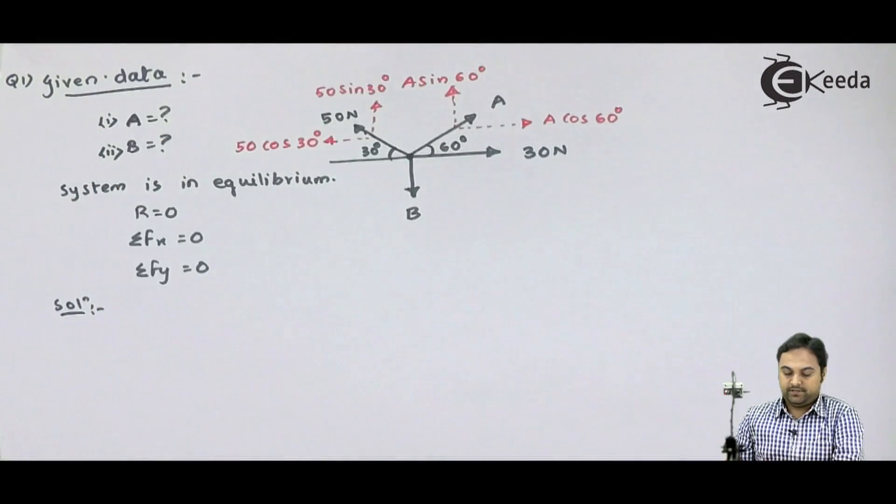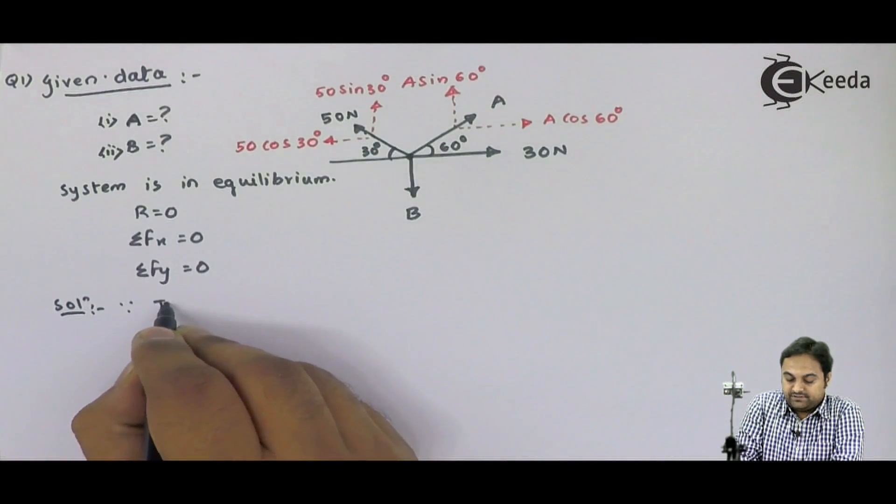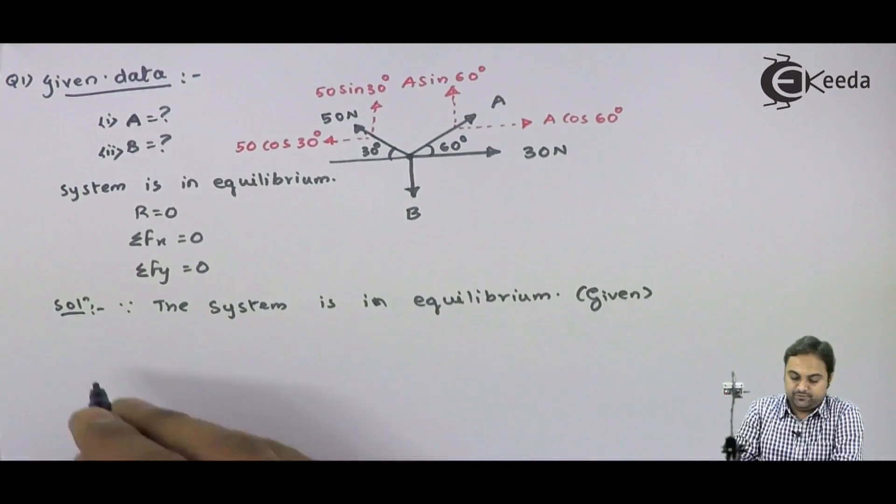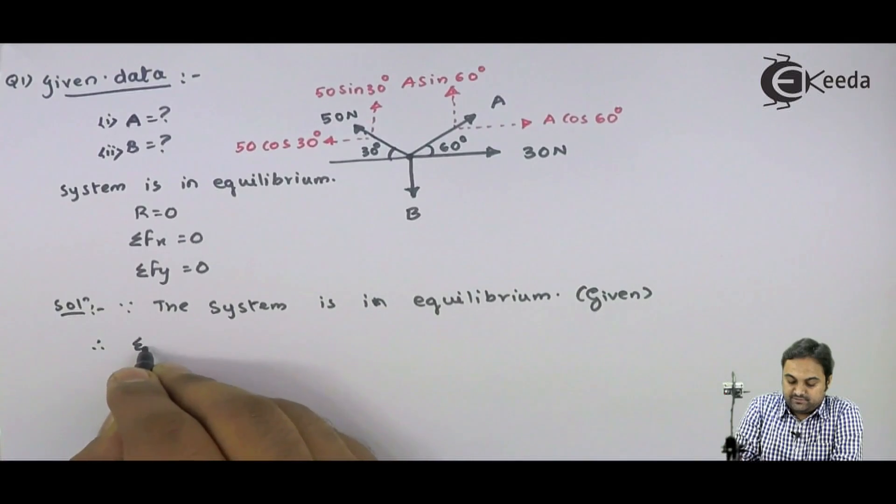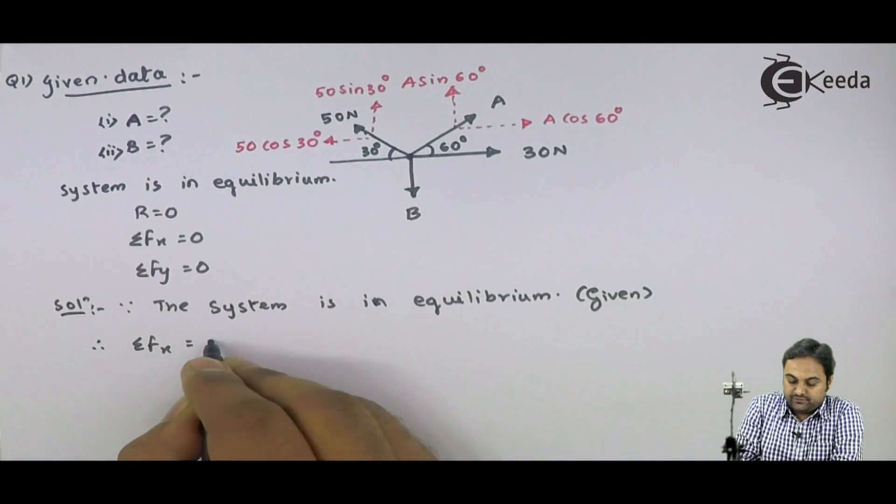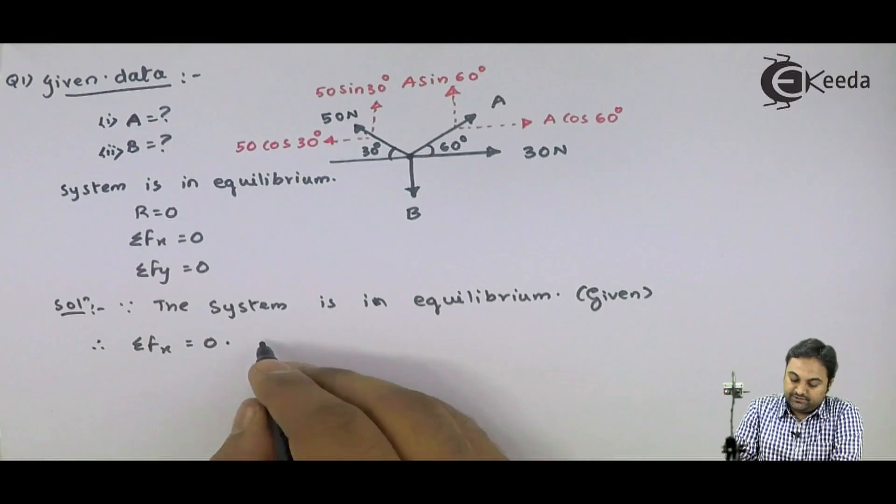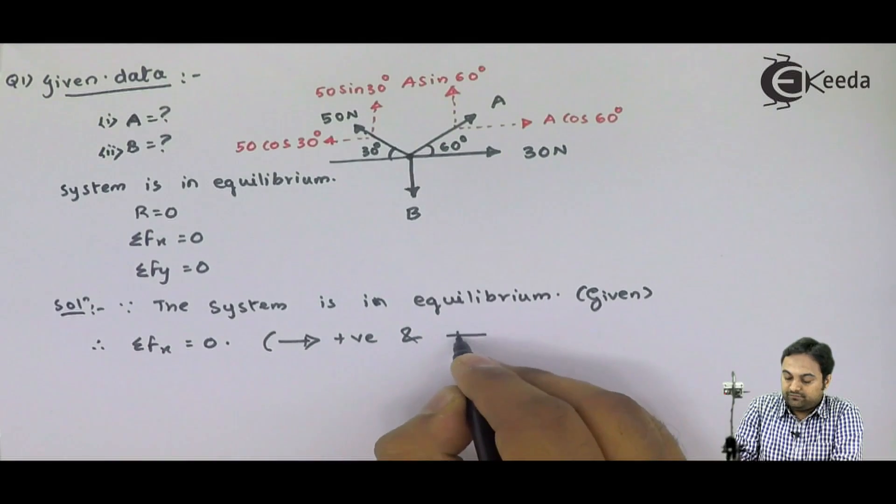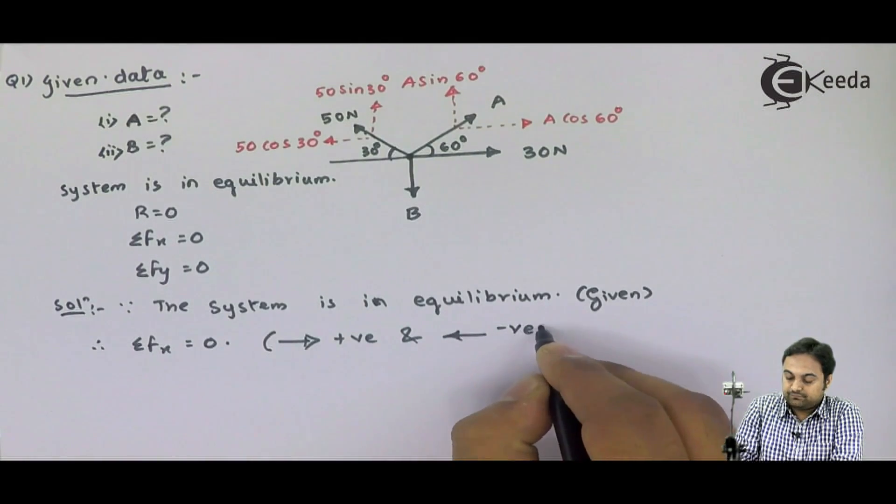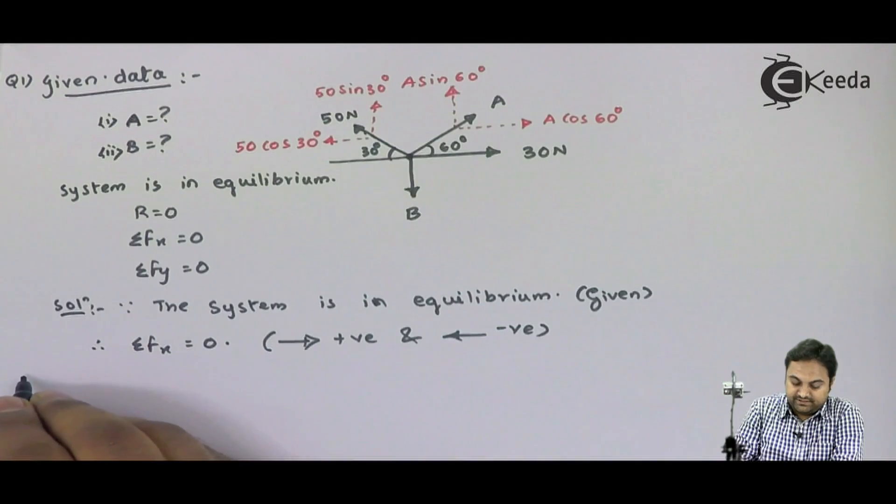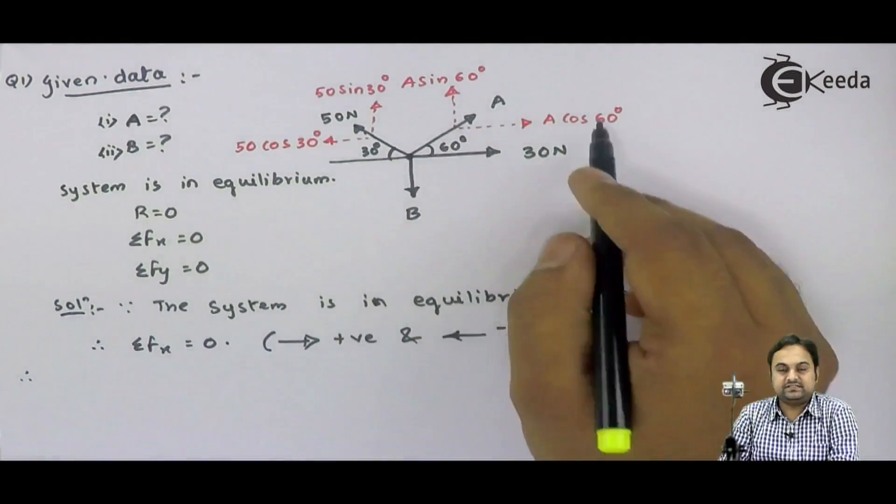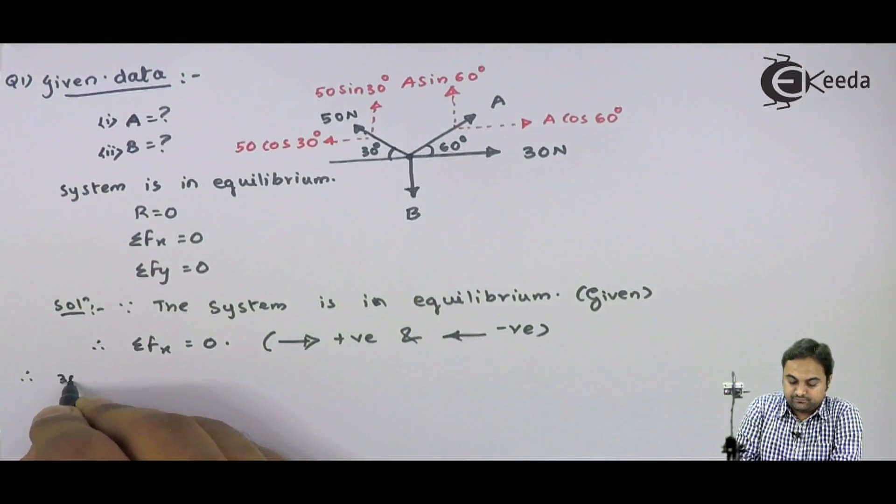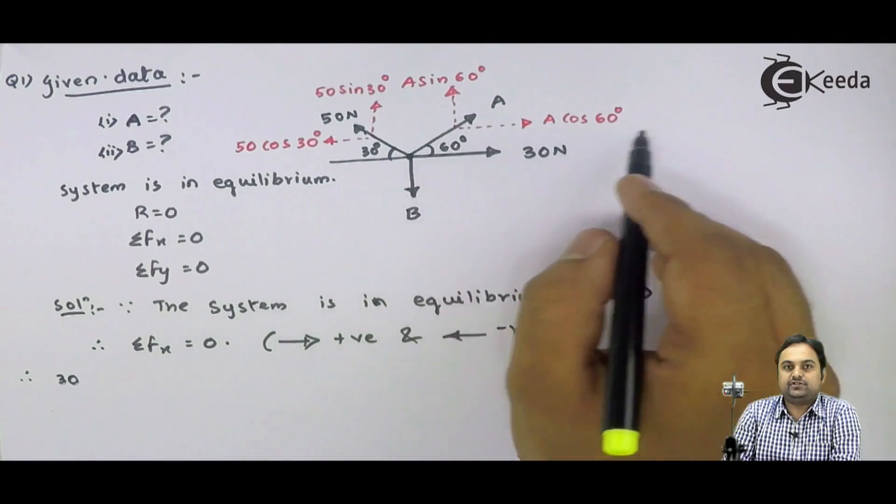Now I will start the solution by saying that since the system is in equilibrium, therefore summation of all horizontal forces are 0. Hence, my convention will be all rightward forces positive and all leftward forces negative. From this, if I look at this diagram, 30 Newton is acting towards right, so positive. A cos 60 is also towards right, so positive.